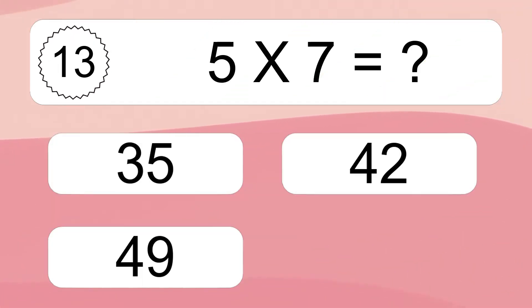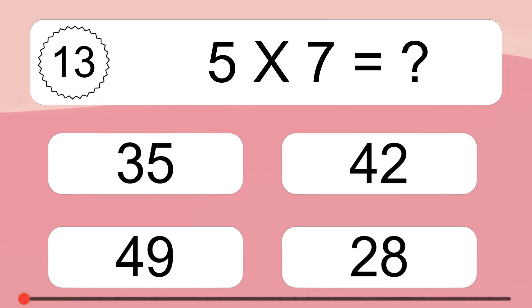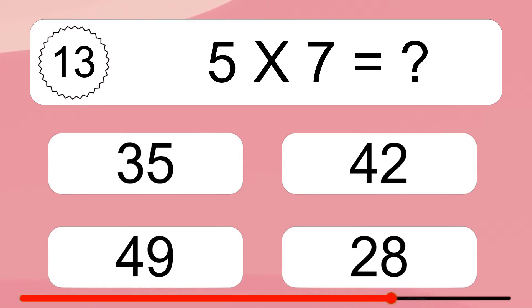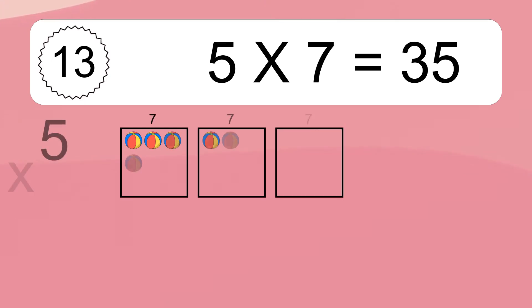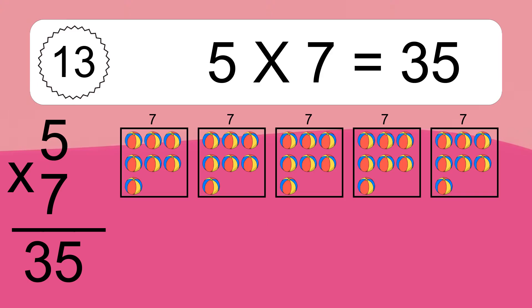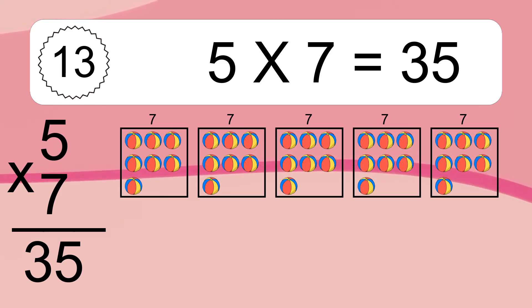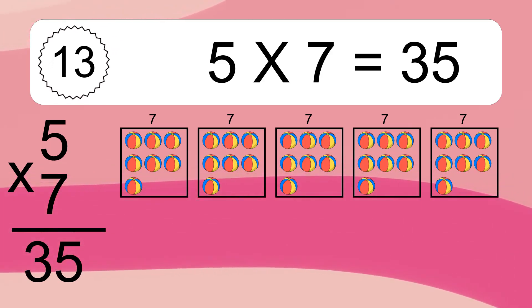5 times 7 equals what? 5 times 7 equals 35. We have 5 boxes and each box has 7 colorful balls inside. If you count all the balls in all the boxes together, you will have 5 times 7 balls. This equals 35 balls.